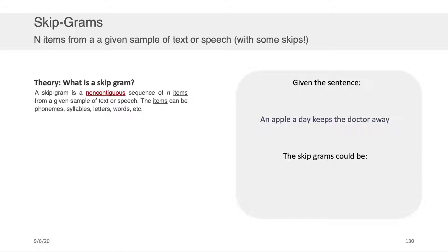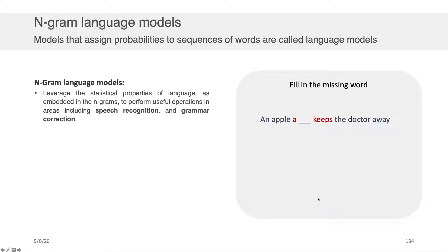For example, if we had the sentence 'an apple a day keeps a doctor away,' the skip-grams could be 'an' and then — notice we jumped over the word 'apple' — 'a.' That could be one of the skip-grams. 'Apple, day' could be another one. 'A, keeps' could be a third skip-gram, and so on.